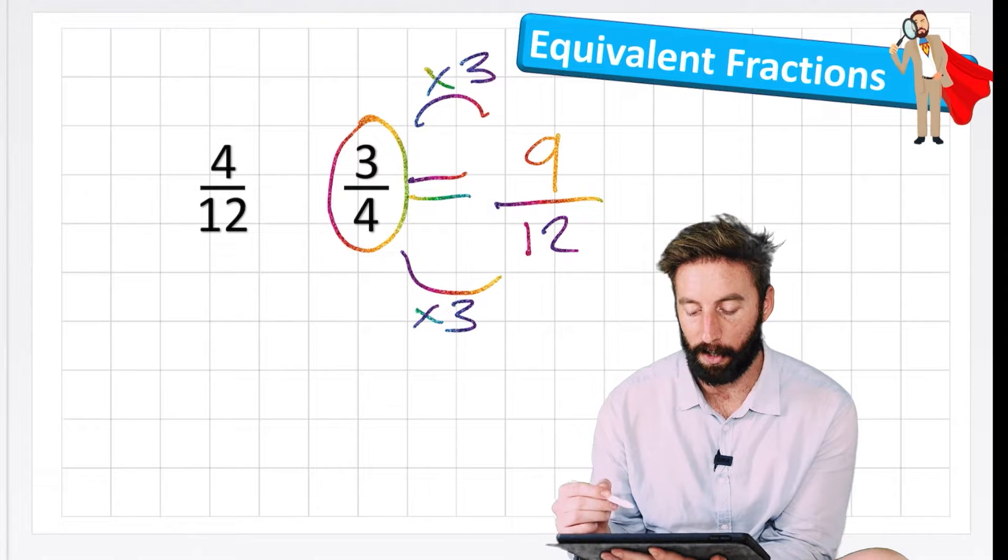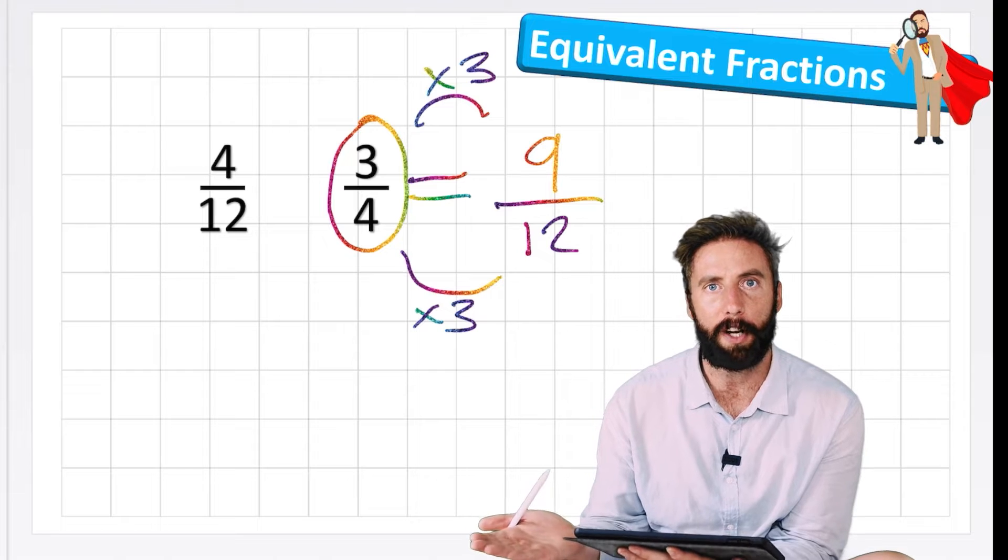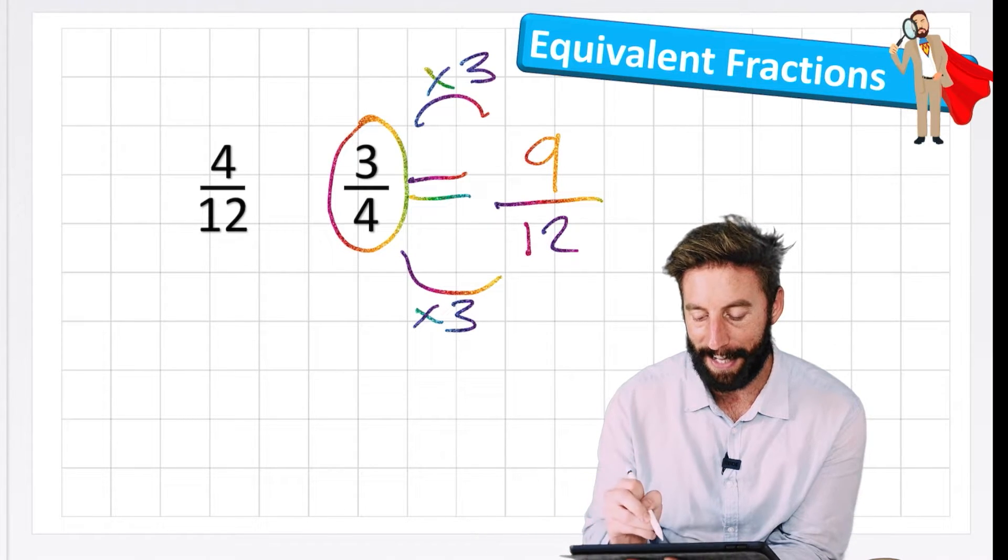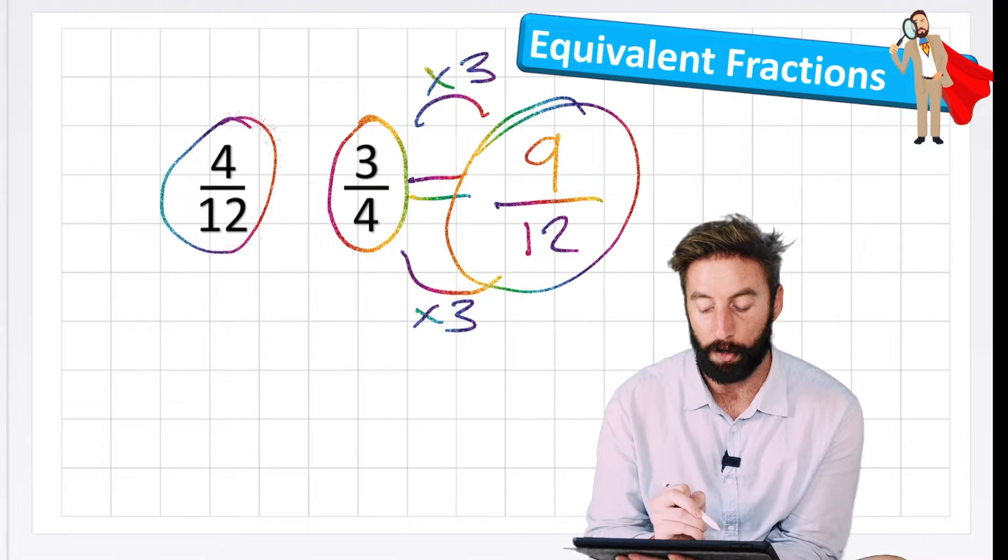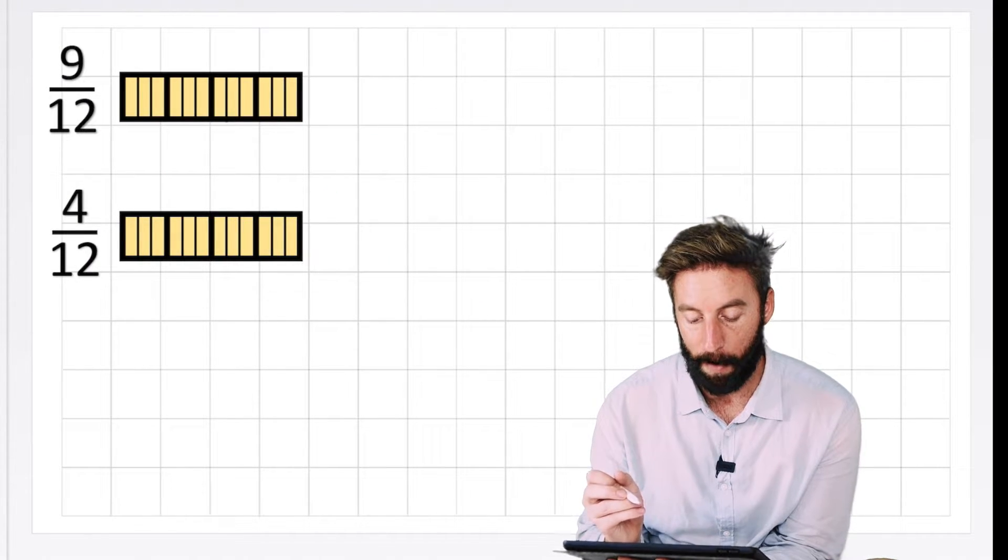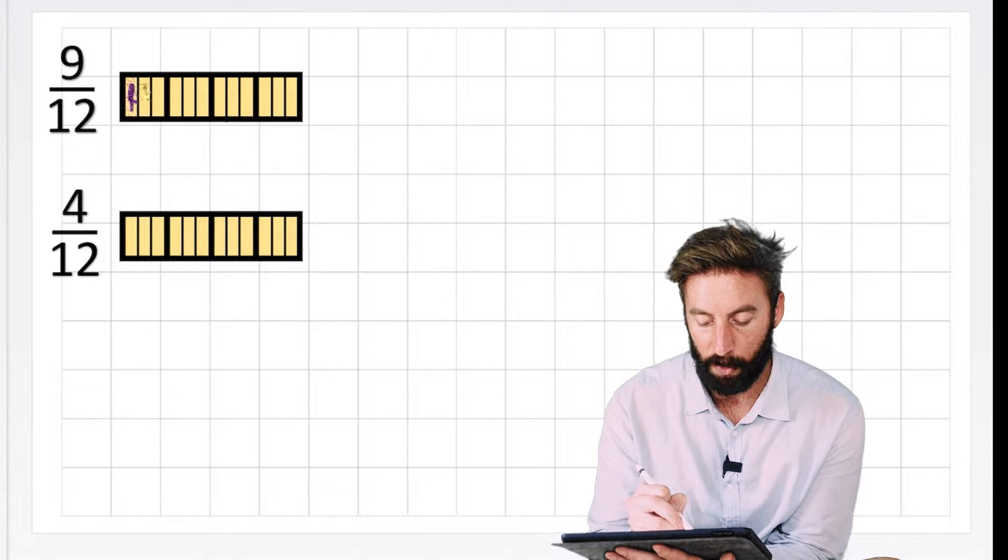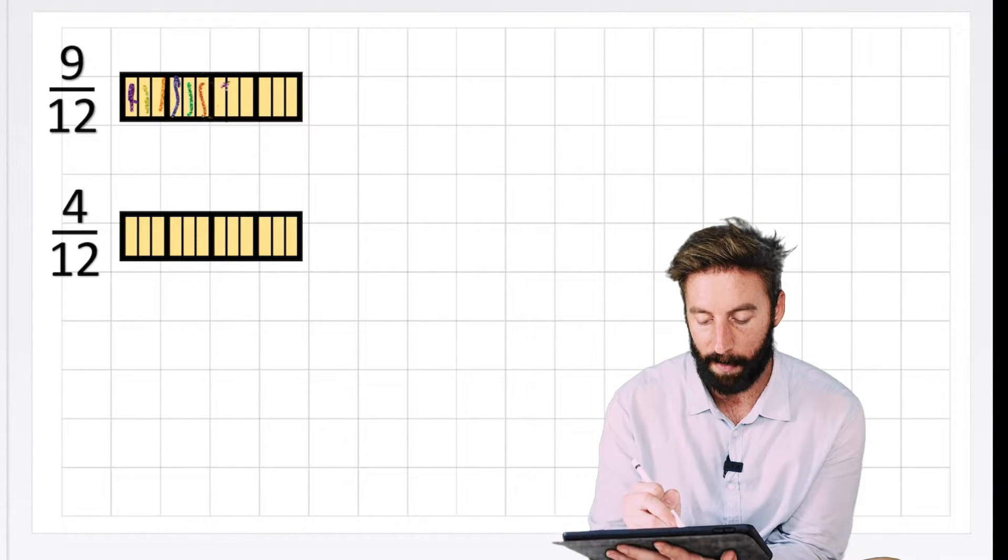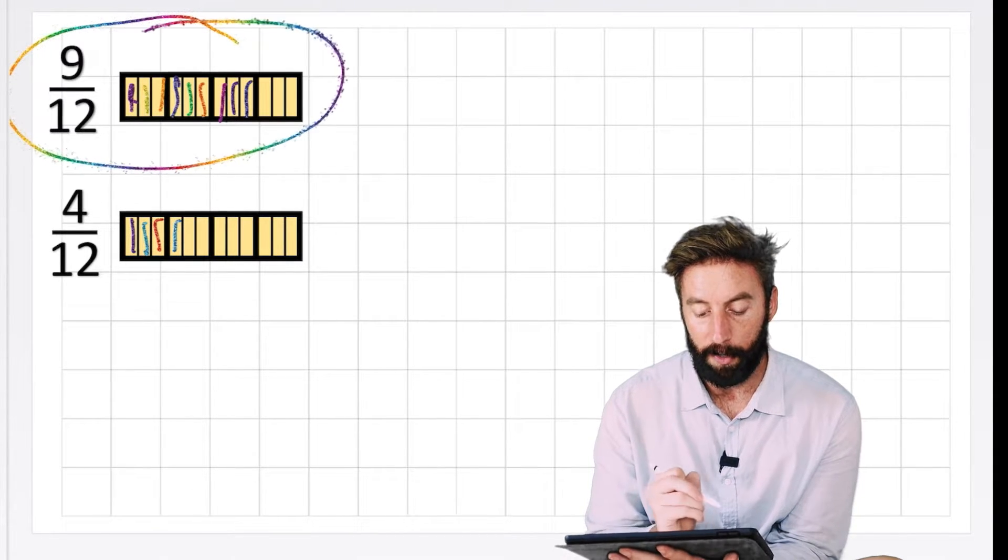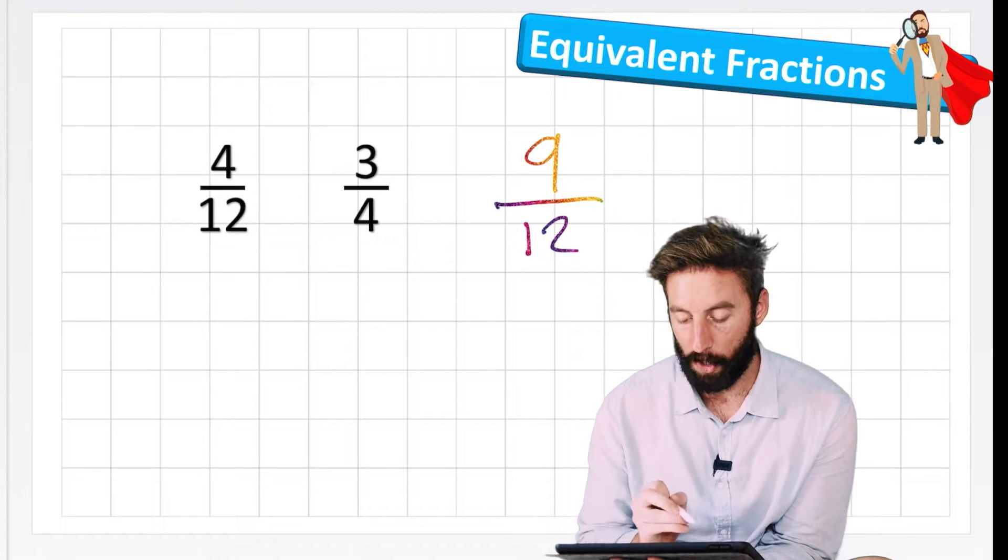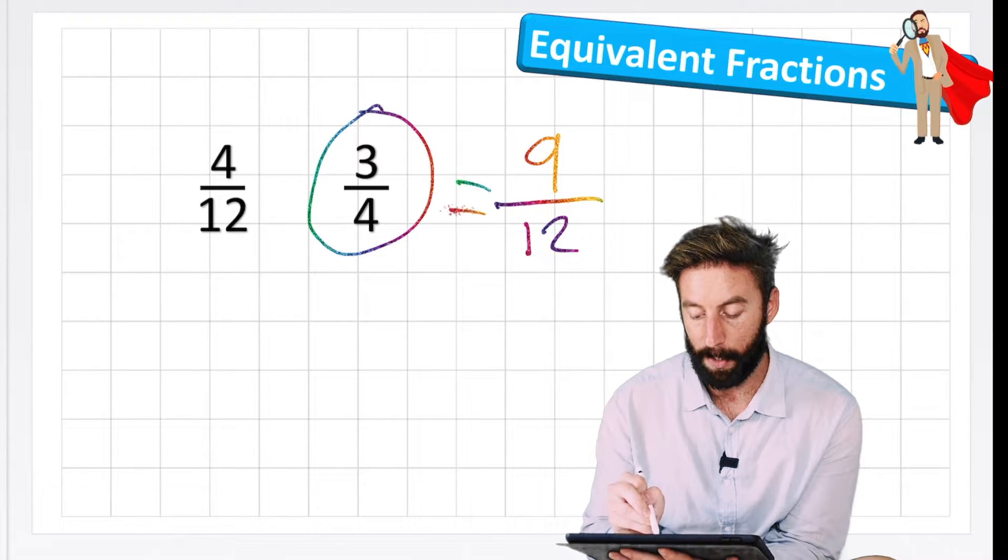So now my two fractions that I'm comparing are 4 twelfths and 9 twelfths. And that's suddenly really easy, isn't it? Because I can clearly see that 9 twelfths of something would have a greater value than 4 twelfths. And I can see that just very quickly in my bar model again. So my 9 twelfths would look like this: 1, 2, 3, 4, 5, 6, 7, 8, 9. Versus my 1, 2, 3, 4 twelfths. So my 9 twelfths is greater. So let's go back to the question. And we now know that 3 quarters is the same as 9 twelfths.